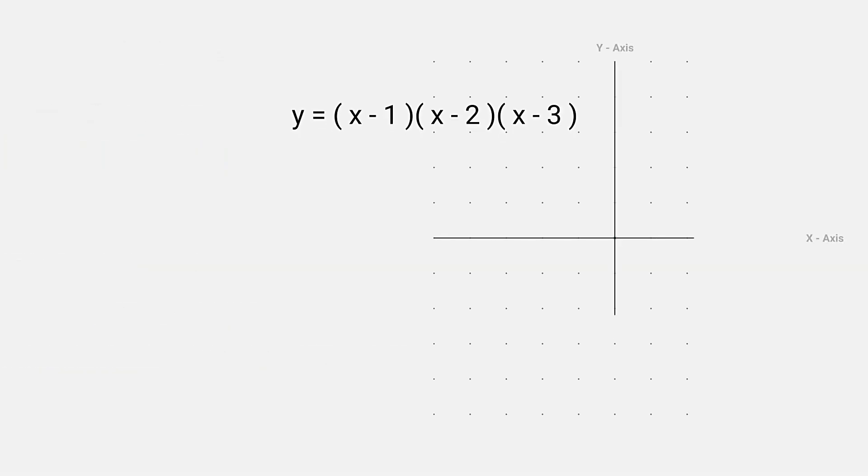For example, when y equal to x minus 1, x minus 2, x minus 3. Put y equal to 0 and we get x equal to 1, x equal to 2 and x equal to 3.